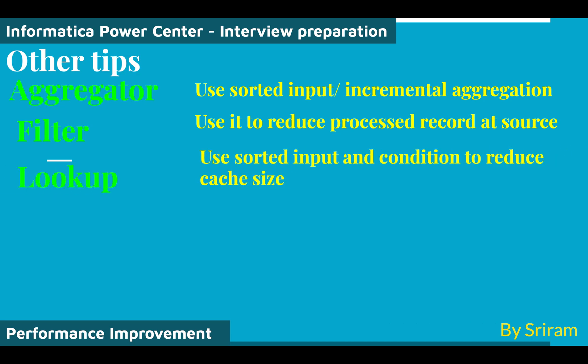For Lookup transformation, use sorted input and add a WHERE condition in the SQL override to reduce the cache size — avoid a simple SELECT * FROM table approach. Also, avoid dynamic lookup cache for large tables; dynamic lookup cache is better suited for smaller tables. Adding conditions to reduce cache size for static lookups significantly improves performance.